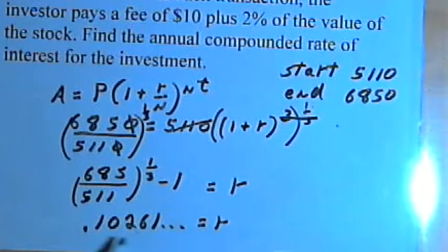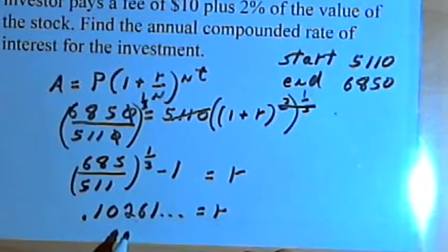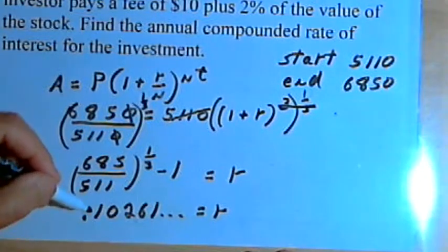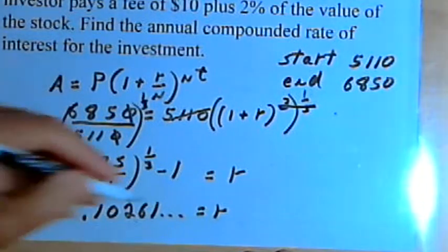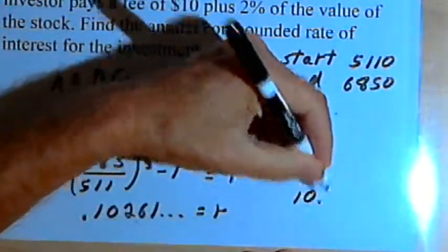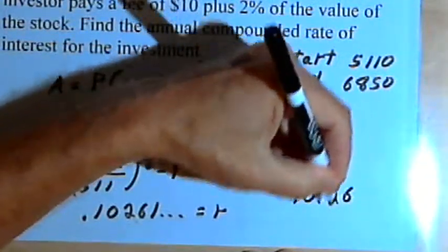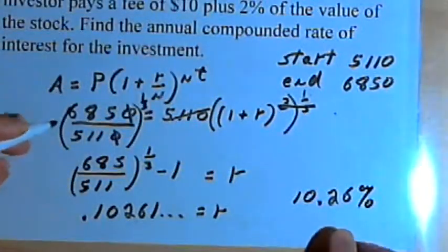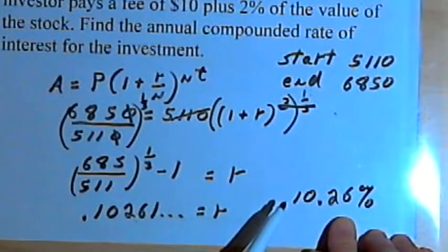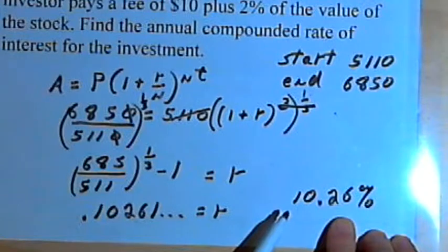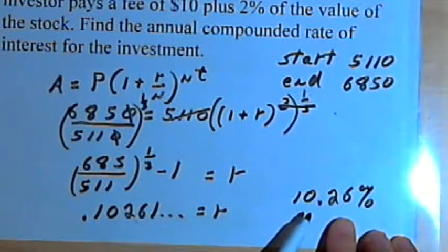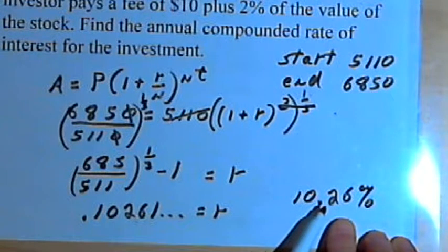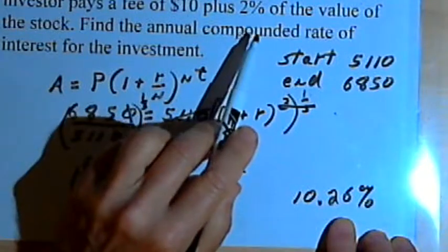So let's take this decimal. This is actually the rate. Let's take it and turn it into a percent. So I'll multiply it by 100. I'll have 10 point... we'll round it to 10.26 percent. So the investor's yield on the investment was 10.26 percent compounded annually.